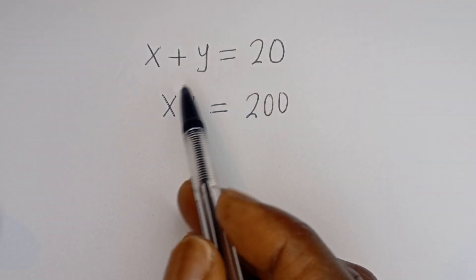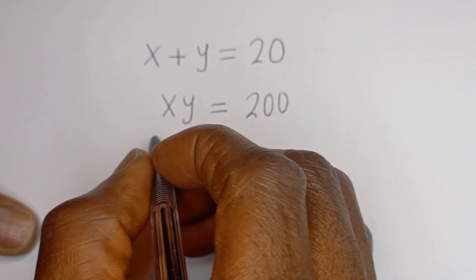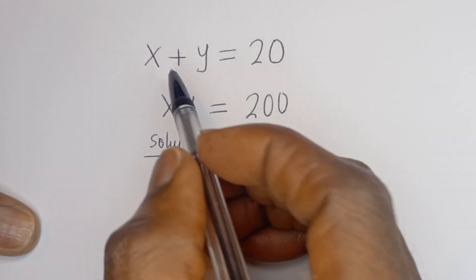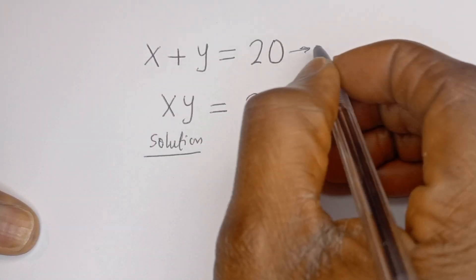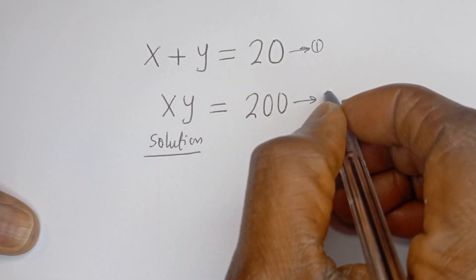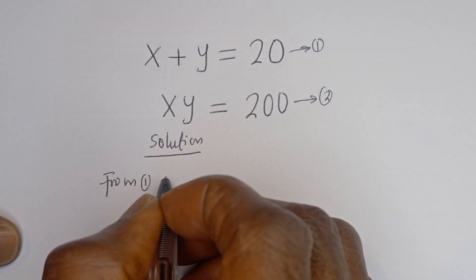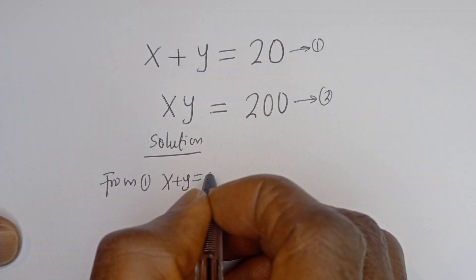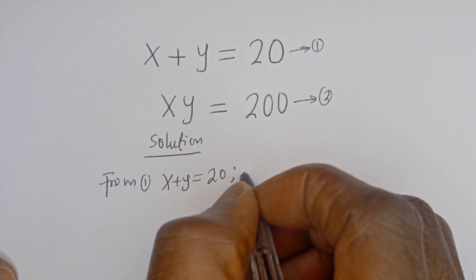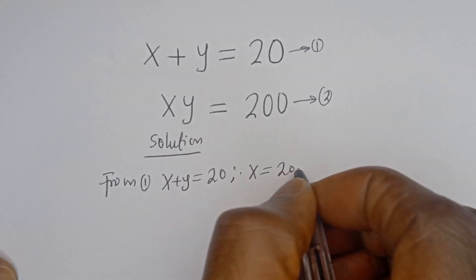Hello. How to solve for X and Y in this equation: X plus Y is equal to 20 — let's call this equation 1 — and XY is equal to 200 — let's call this equation 2.